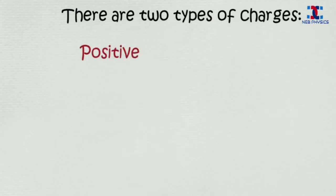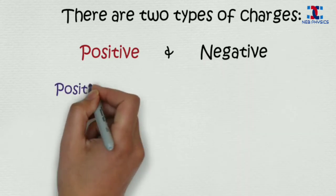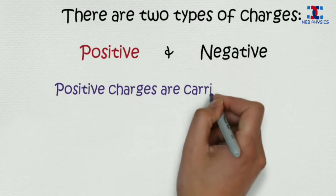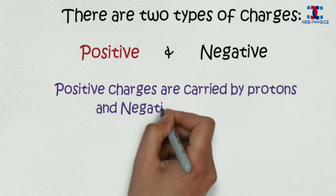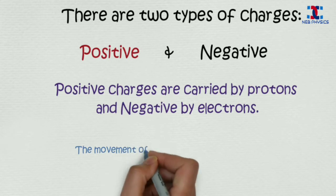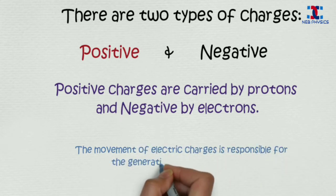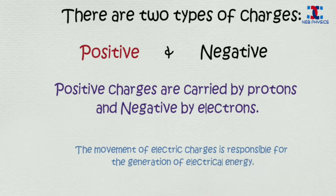There are two types of charges, positive and negative. The positive charges are carried by protons and the negative charges by electrons. The movement of electric charges is responsible for the generation of electrical energy.